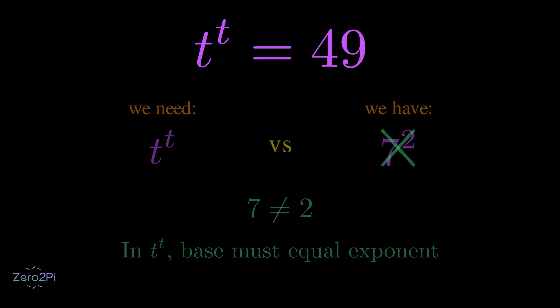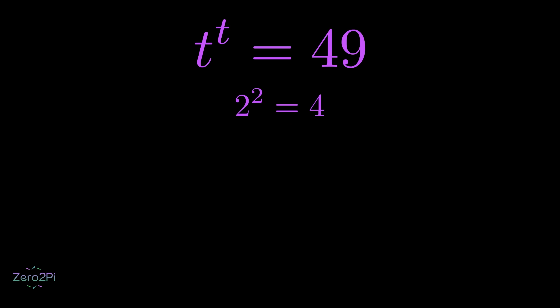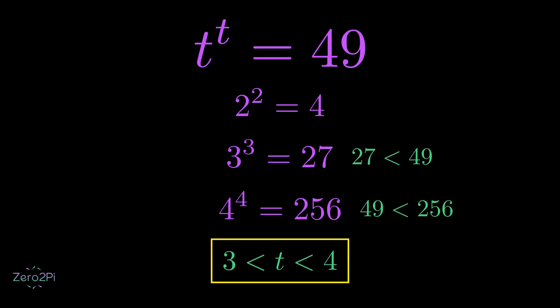What if we start making some guesses? Try 2 to the power of 2, 3 to the power of 3, 4 to the power of 4. Hmm, none of those equal 49. But we can clearly see that 27 is less than 49 and 256 is greater than 49. We got a clue that solution must be somewhere between 3 and 4.